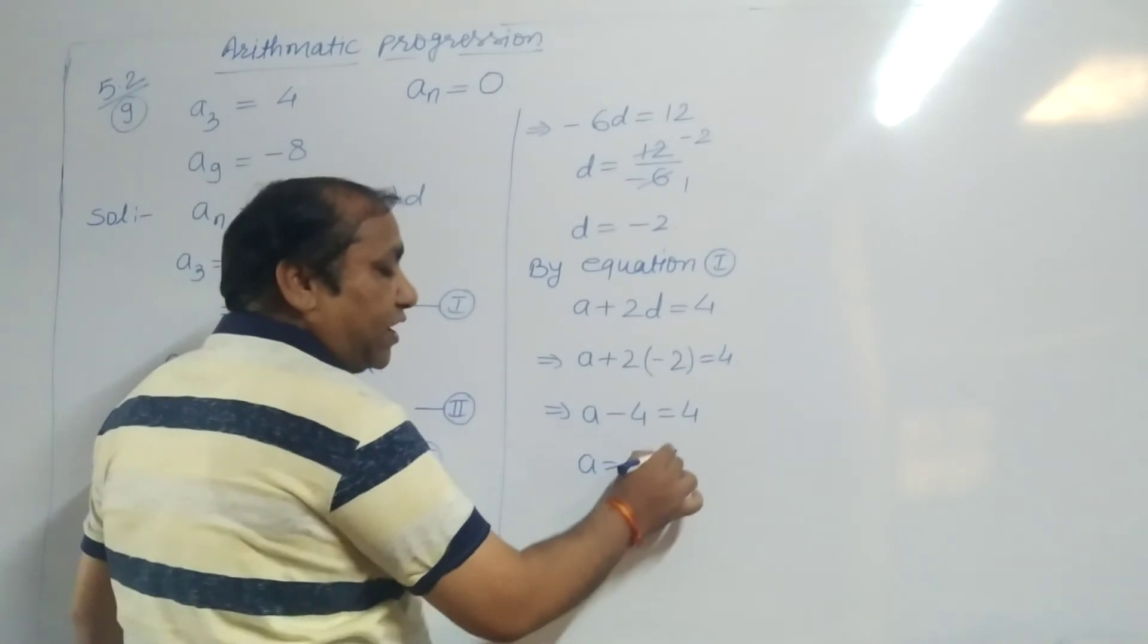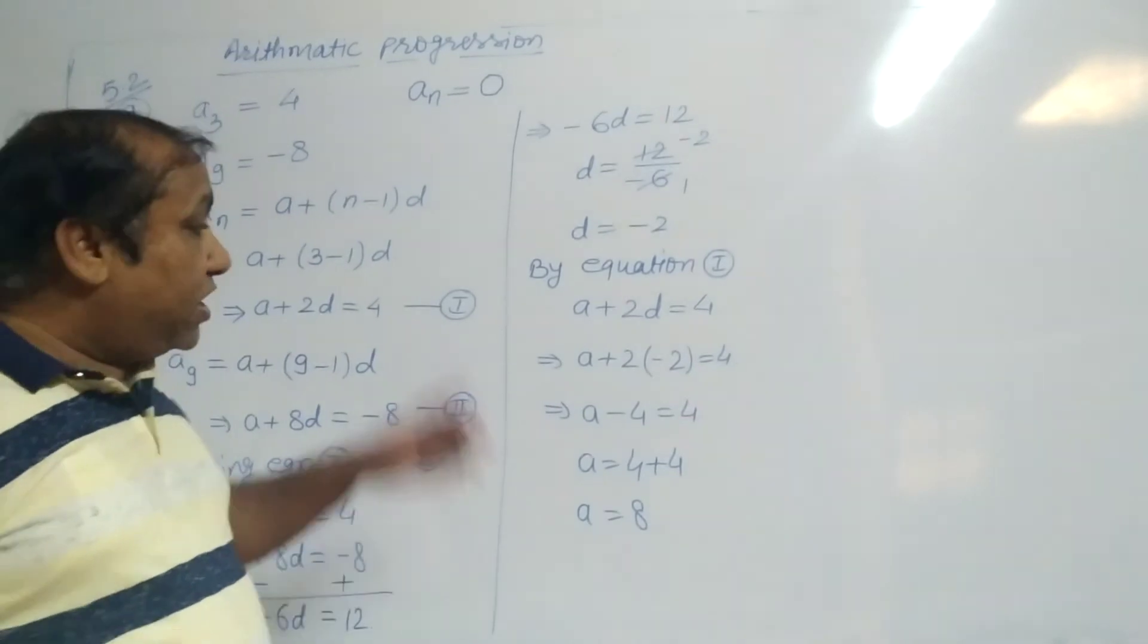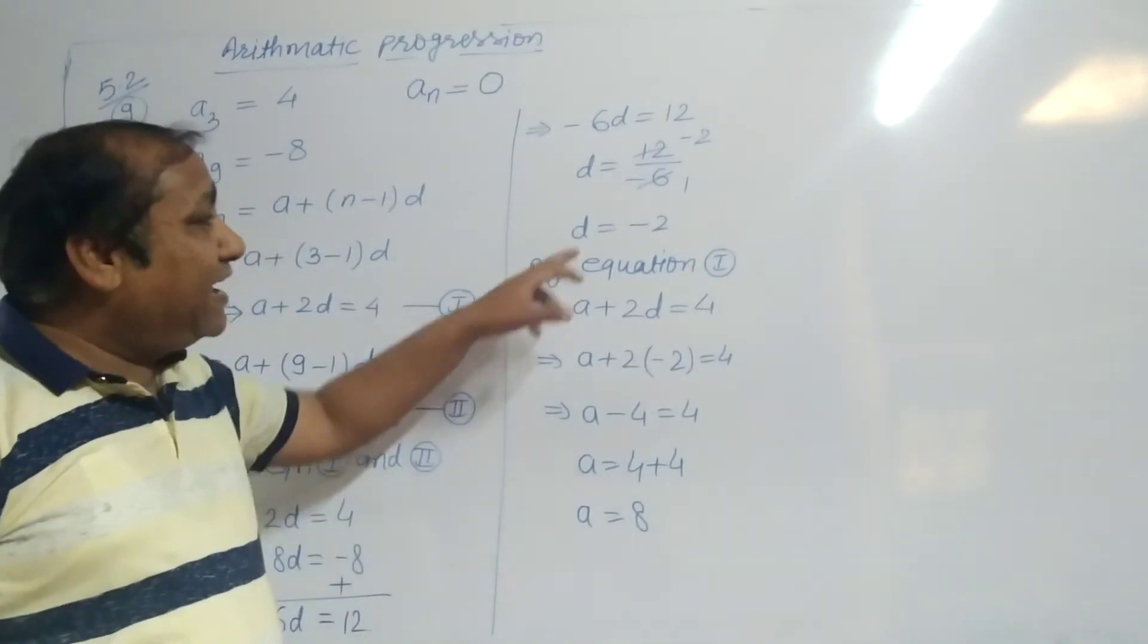Minus 4 goes to the other side as plus 4. A equals 4 plus 4 equals 8. Now you have the value of A and D.